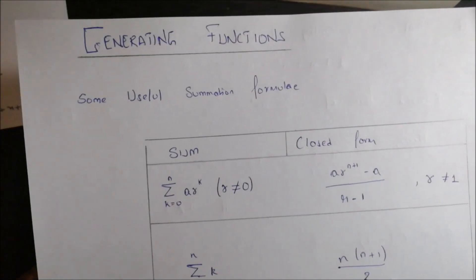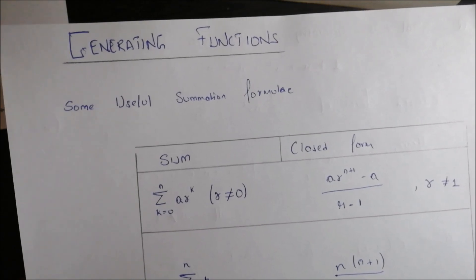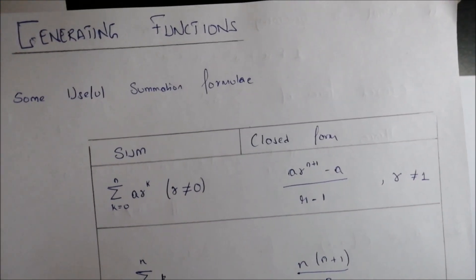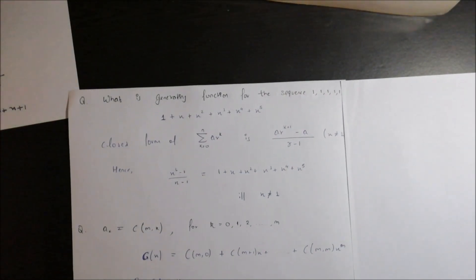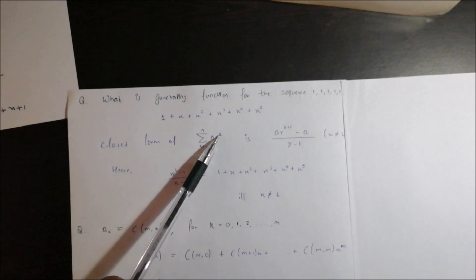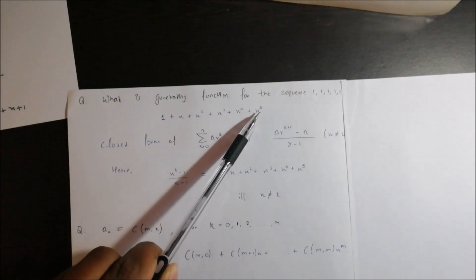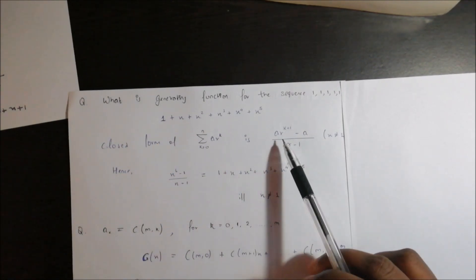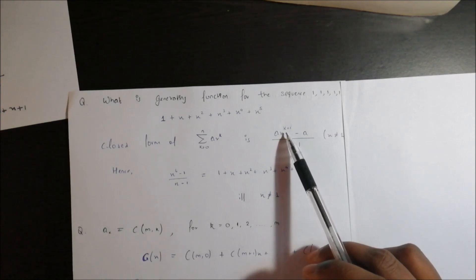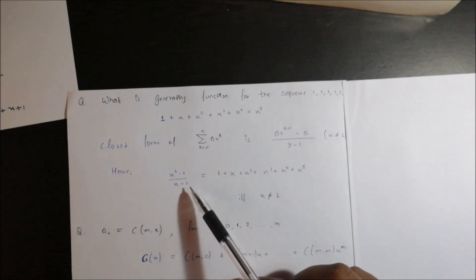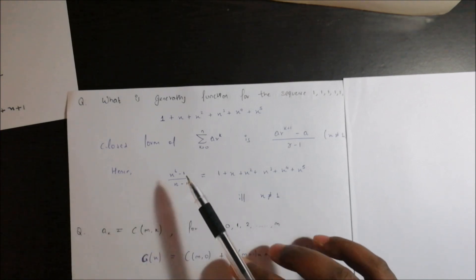The formula is: summation of k equals 0 to n of a·r^k, with closed form a·r^(n+1) minus a upon r minus 1. In this question, a is 1, n is 5, and r is x. So the closed form is 1·x^(5+1) minus 1 upon x minus 1, which is x⁶ minus 1 upon x minus 1. Simple, straightforward formula.